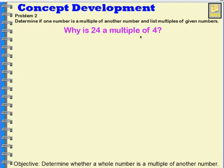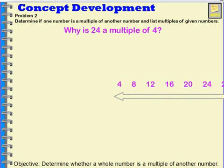So why is 24 a multiple of four? Well, when I think back to my number line and I see that 24 is on that number line, I know that four times six is 24. So therefore 24 is a multiple of four.